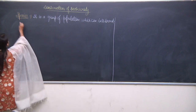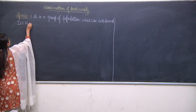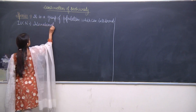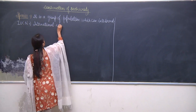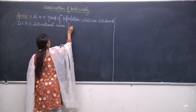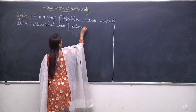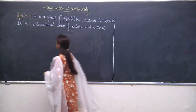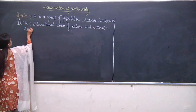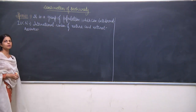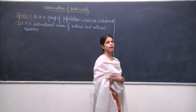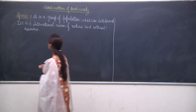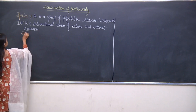Let me talk about IUCN — its full form is International Union of Nature and Natural Resources. IUCN has divided species into certain categories. It has divided species into actually three categories.